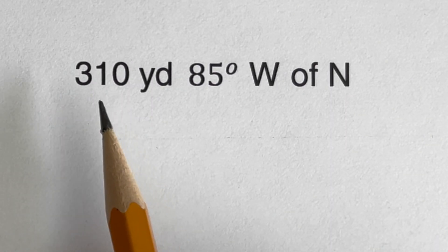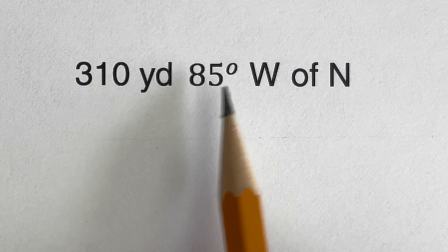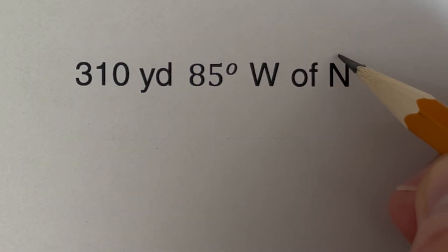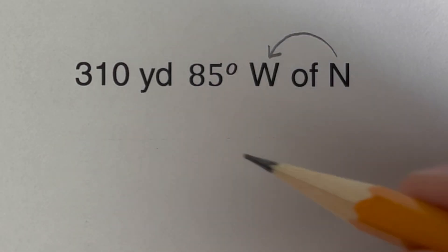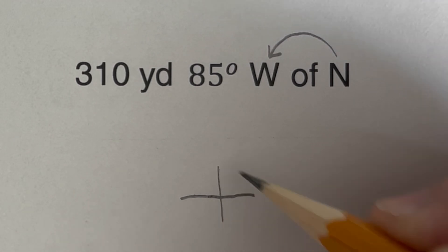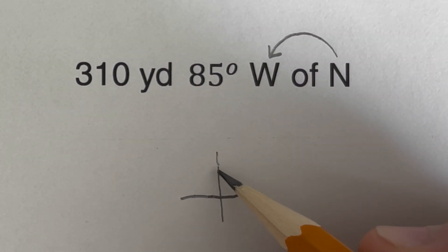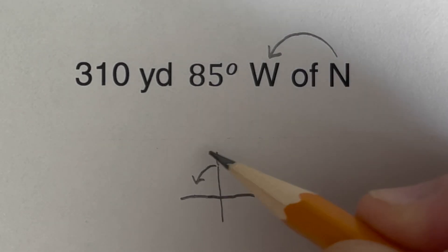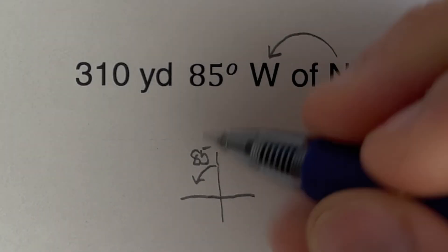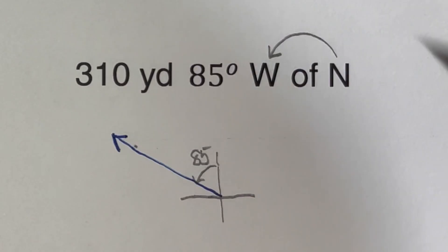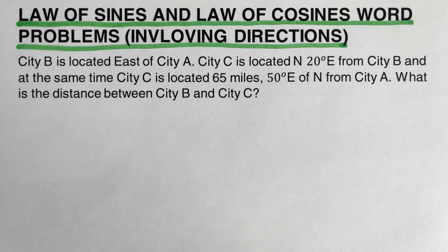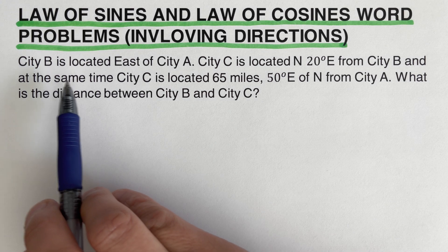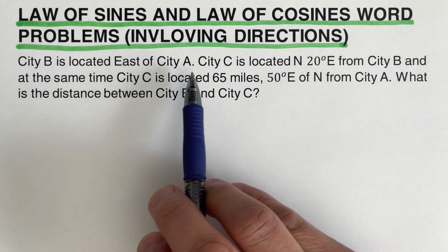The last direction example is 310 yards 85 degrees west of north. We start from north going to the west and it measures 85 degrees. Drawing that out, we go from north toward west at 85 degrees, and this line represents 310 yards.